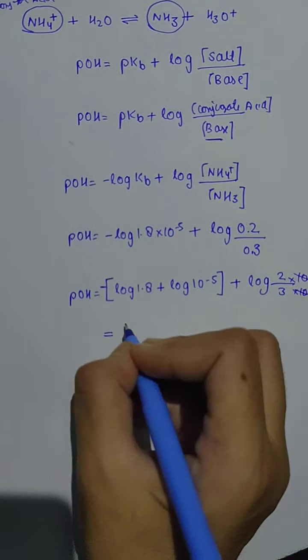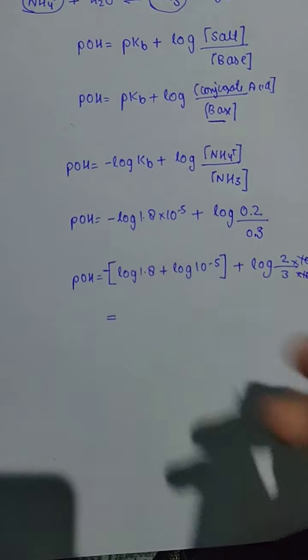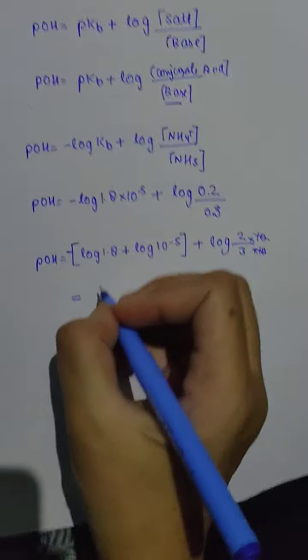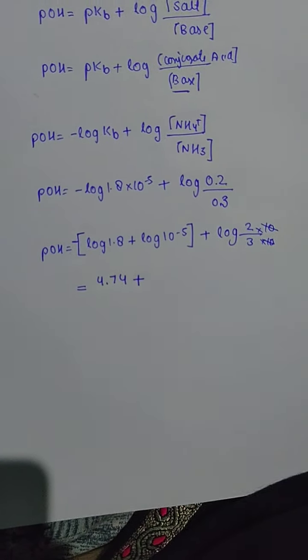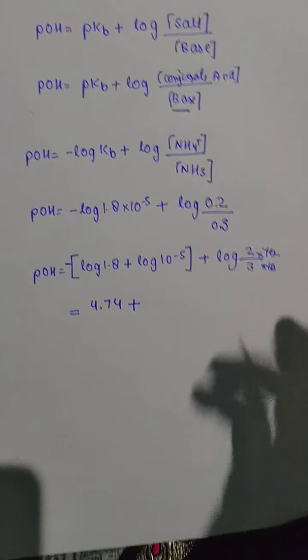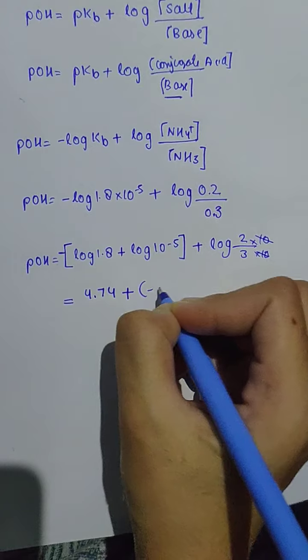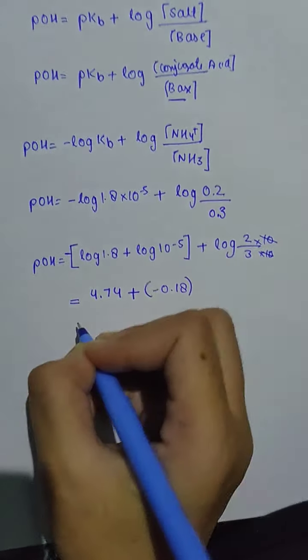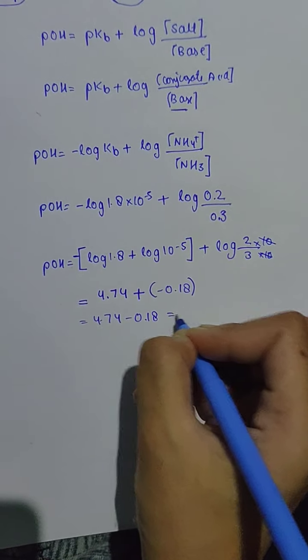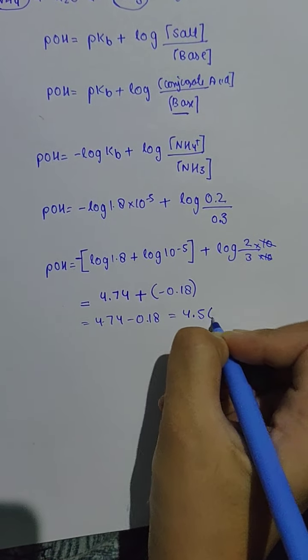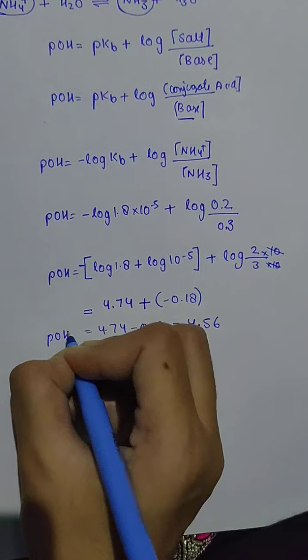This value is coming out to be around 4.74, and log 2/3 gives minus 0.18. So we get 4.74 minus (-0.18), which equals 4.56. This is the pOH value.